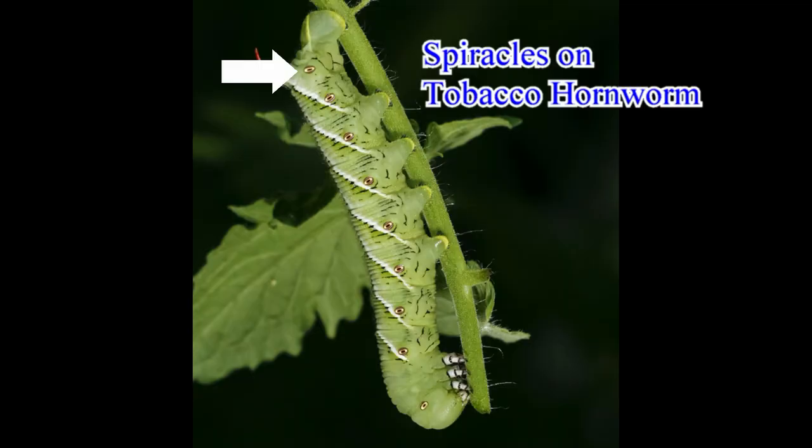Insects do not have lungs, and their blood does not contain hemoglobin to carry oxygen. Insects breathe through tiny holes in their skin called spiracles. The oxygen passes through a system of branching tubes to all parts of the body.